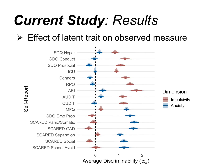Looking at the discriminability parameters for each self-report item, high discriminability was found for impulsivity-congruent measures, as expected. Importantly, in this multi-dimensional model, discriminability can be positive or negative for each dimension: irritability is positively associated with both impulsivity and anxiety; alcohol use is predicted by both higher impulsivity and higher anxiety; whereas for the aggression questionnaire, lower anxiety predicts less endorsement of higher categories. These multi-dimensional IRT models capture interesting interactions between traits.